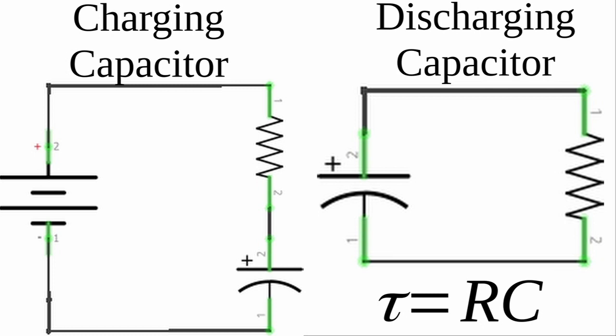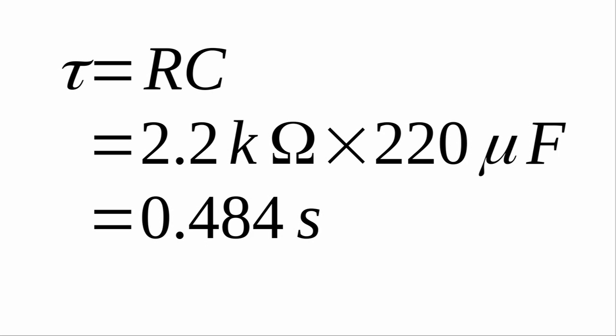For our experiment, we want the time constant to be between 0.5 and 2 seconds. As an example, the time constant for a 2.2 kiloohm resistor with a 220 microfarad capacitor is 0.484 seconds.